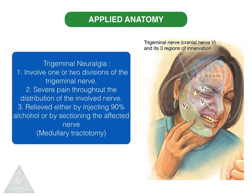Trigeminal neuralgia involves one or two divisions of the trigeminal nerve. Severe pain is seen throughout the distribution of the involved nerve, relieved either by injecting 90% alcohol into the affected nerve or by sectioning the affected nerve, which is termed medullary tractotomy.